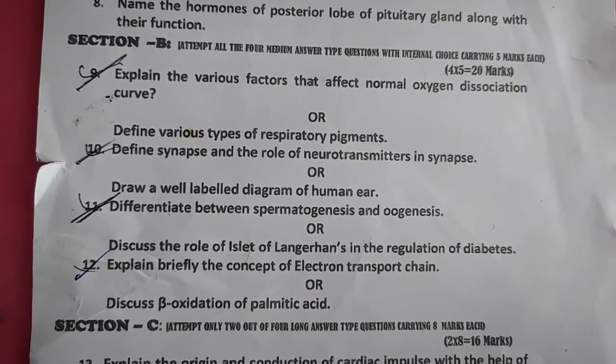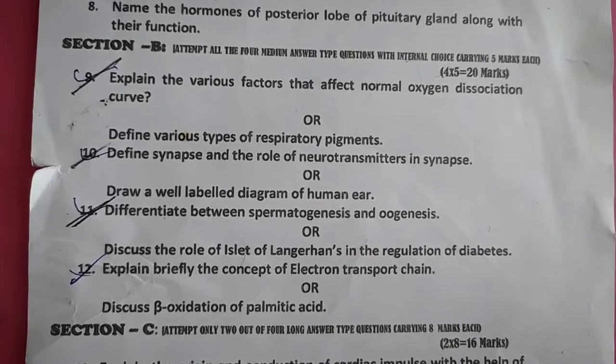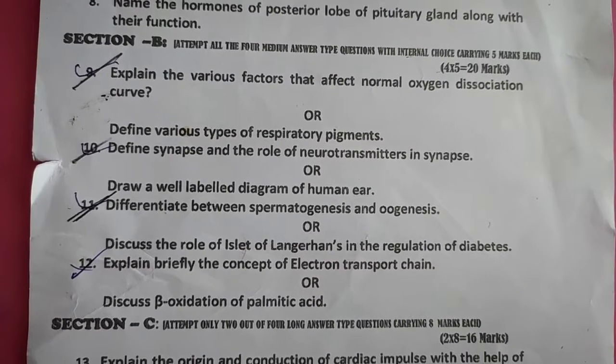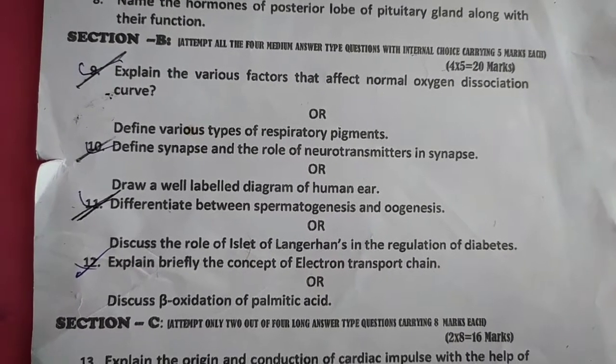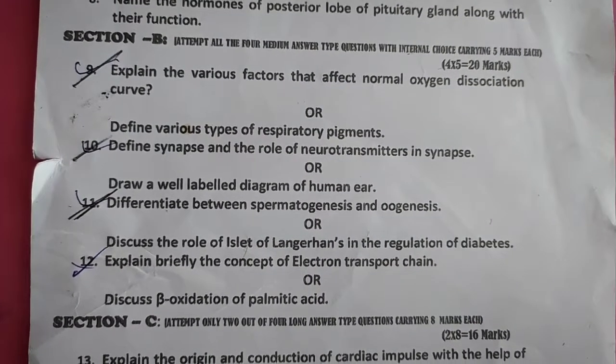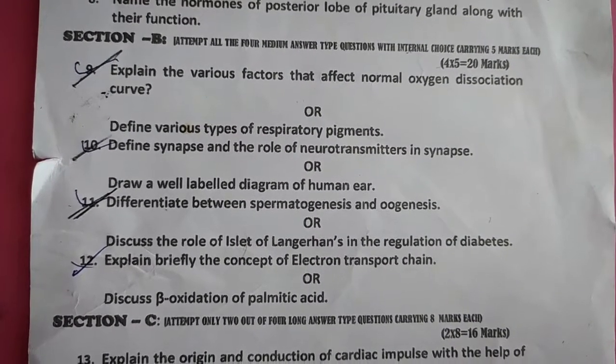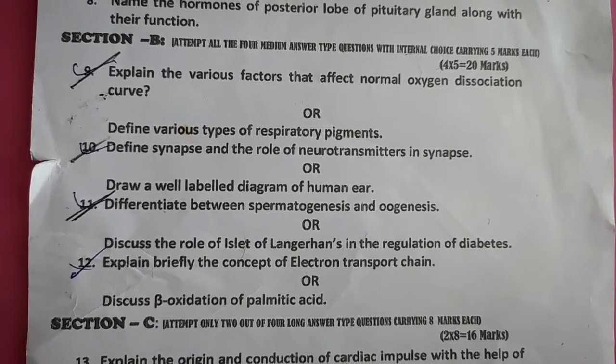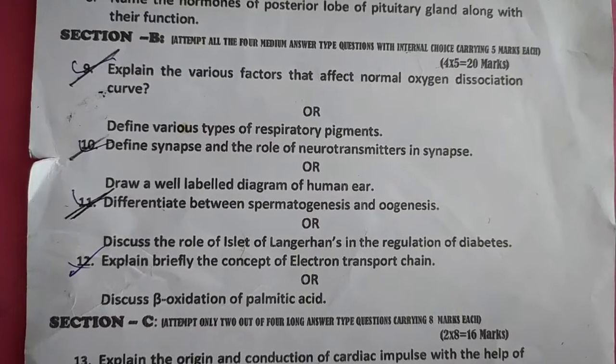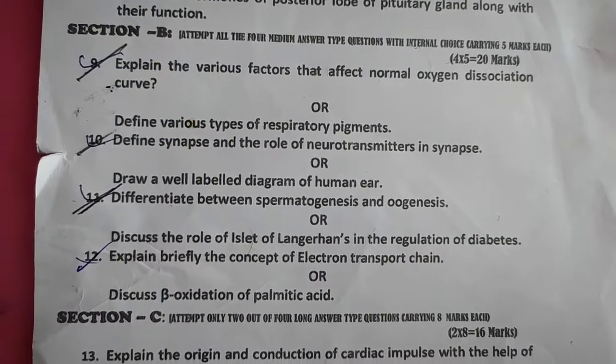Question number 11. Differentiate between spermiogenesis and eugenesis. Or, discuss the role of the Islets of Langerhans in the regulation of diabetes.